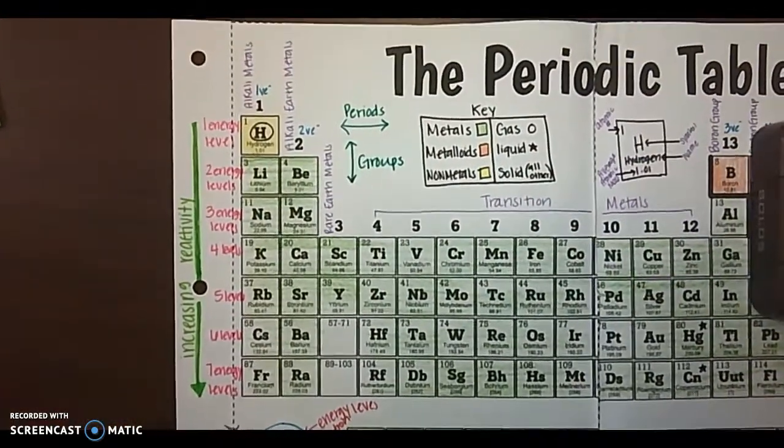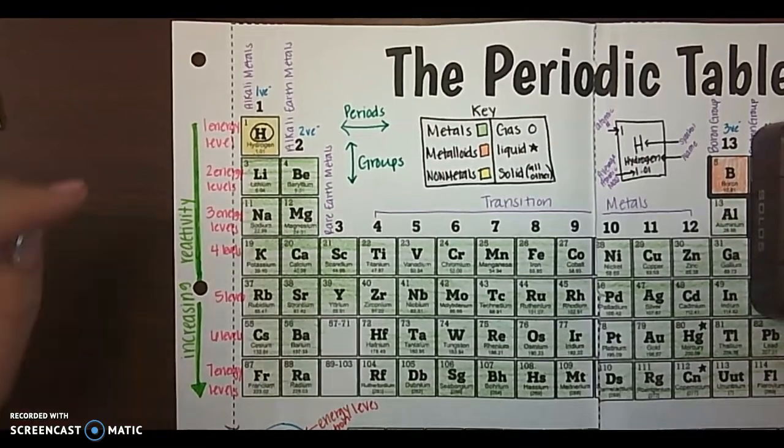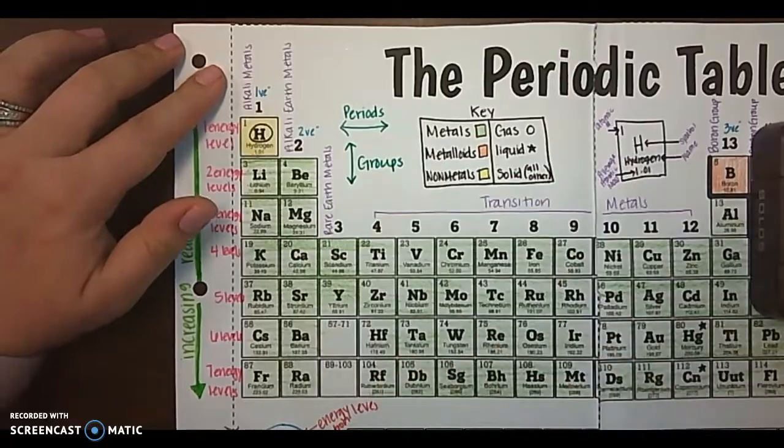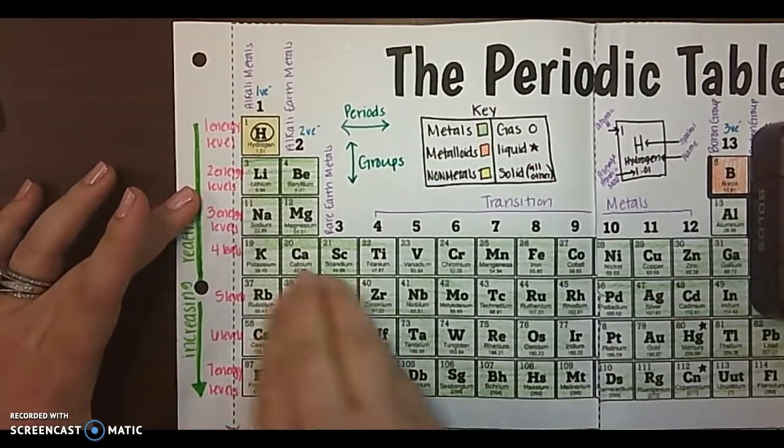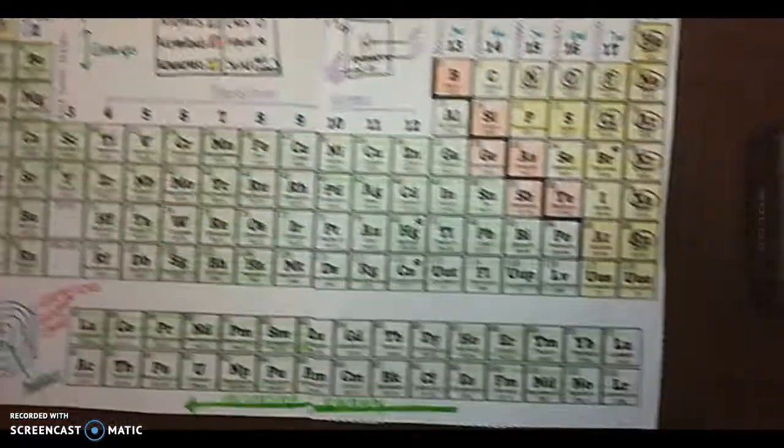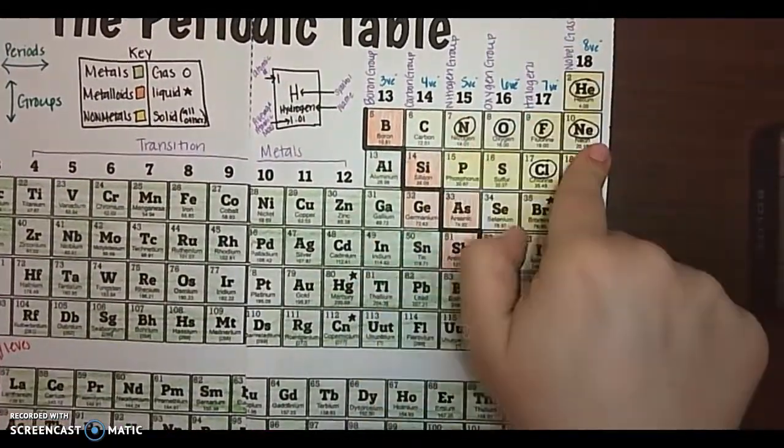When we talk about reactivity on our groups, increasing reactivity going down the periodic table. So our elements over here are going to be the most reactive. Our elements over here, least reactive.